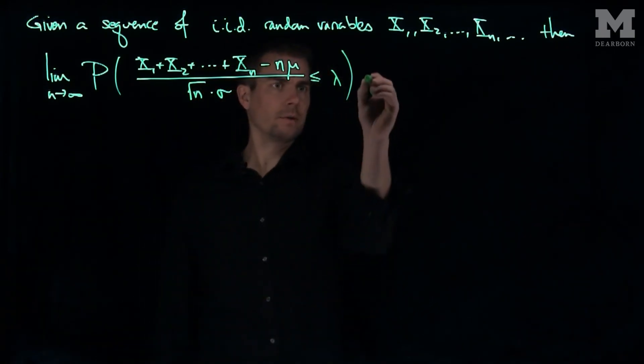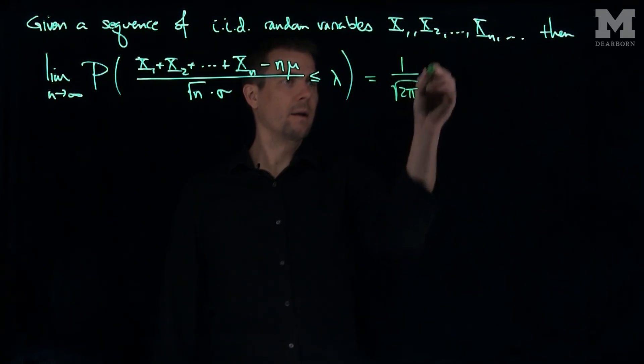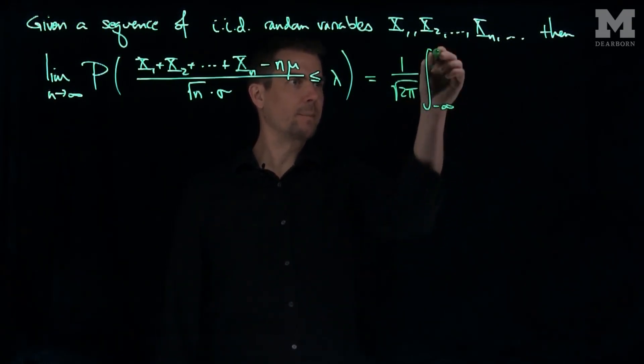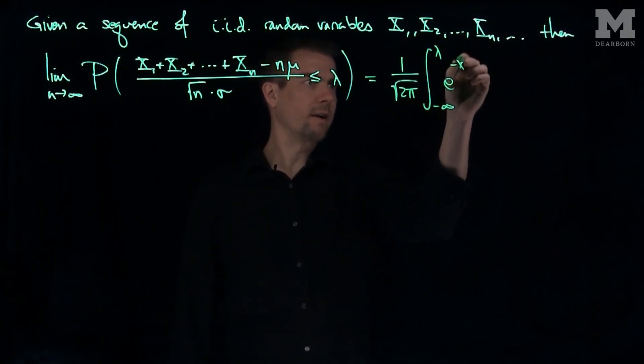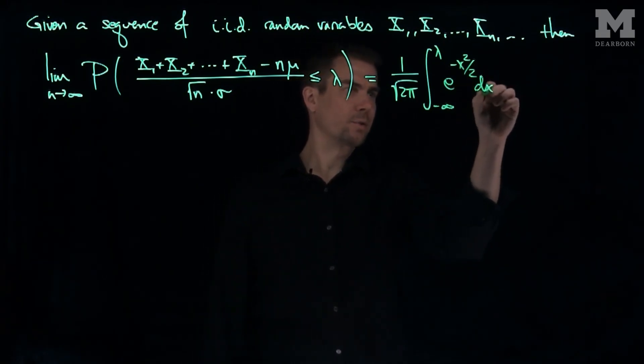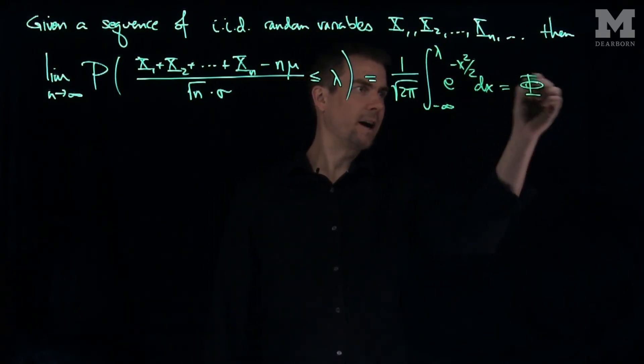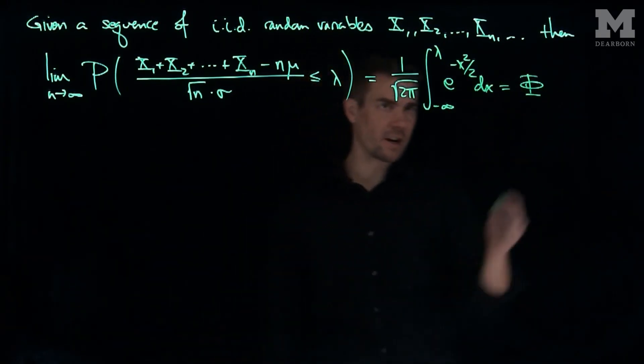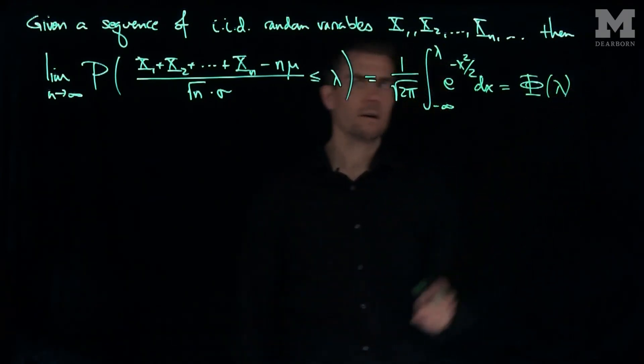This ratio goes to one over the square root of 2 pi, the integral from negative infinity up to lambda of e to the negative x squared over 2 dx, which is exactly just phi, the CDF of a standard normal random variable evaluated at lambda.